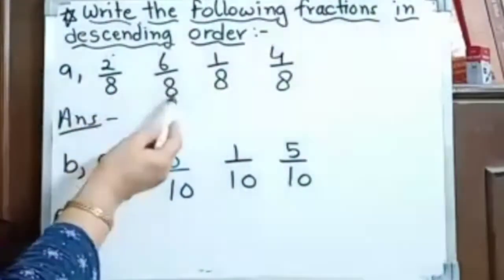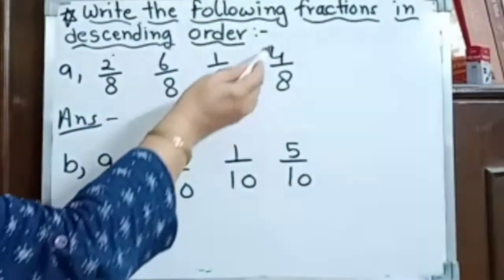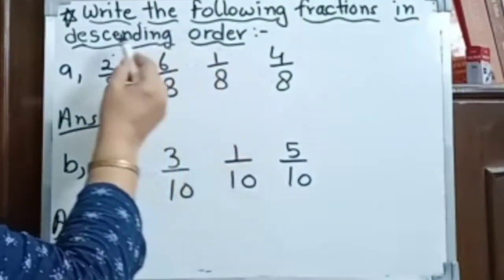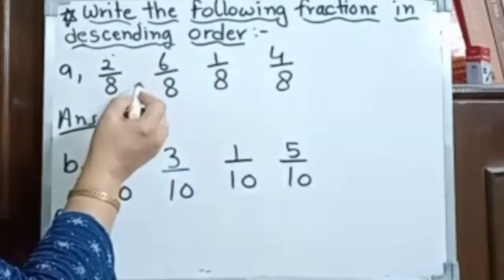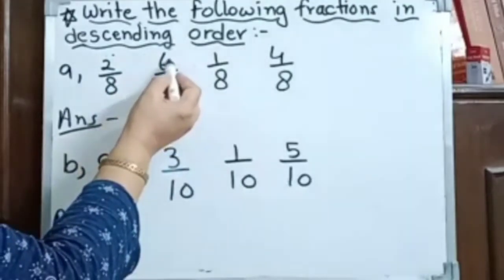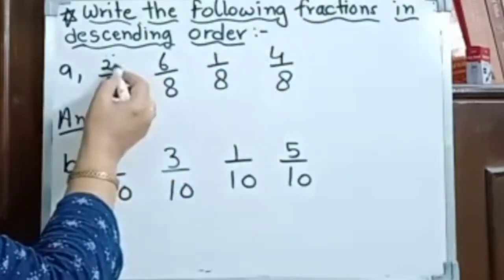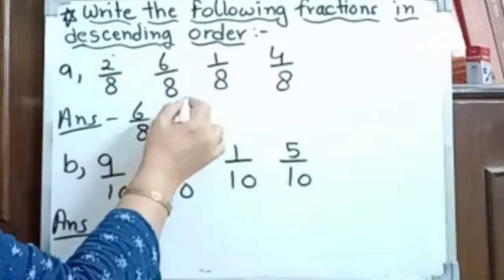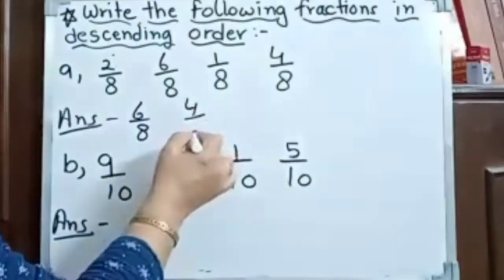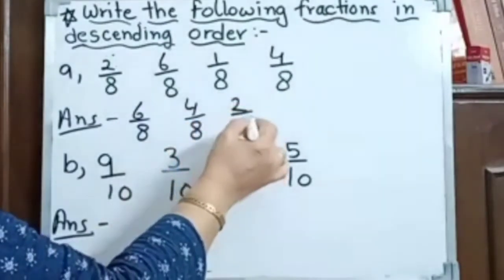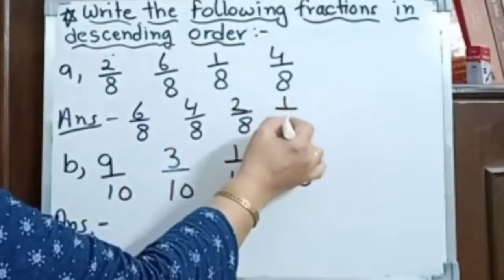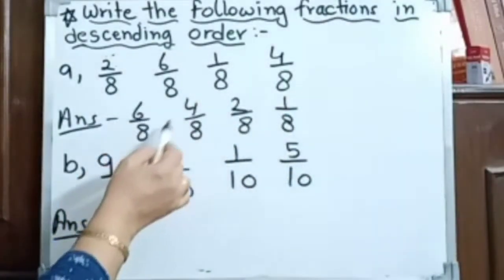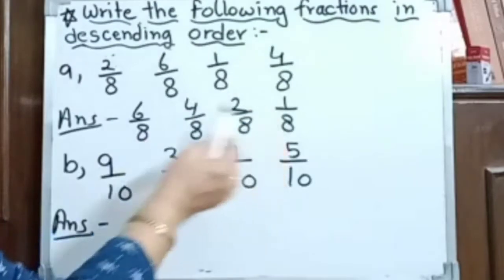Write the following fractions in descending order: 2 by 8, 6 by 8, 1 upon 8, 4 upon 8. The denominator is the same — 8. Descending means bigger to smaller. First take 6, then 4, then 2, then 1. So descending order is: 6 upon 8, 4 upon 8, 2 upon 8, 1 upon 8. This is descending order: 6 by 8, 4 by 8, 2 by 8, 1 by 8. Bigger to smaller.